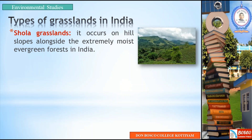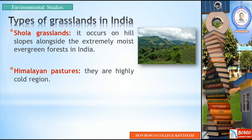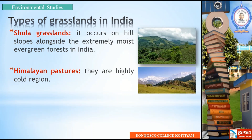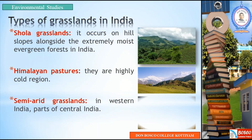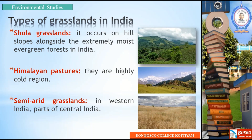Another type is Himalayan Pastures, found in highly cold regions of the Himalayas. Semi-arid grasslands are found in Western India and parts of Central India. These are dry grasslands. The three common grassland ecosystems in India are: Shola Grasslands, Himalayan Pastures, and Semi-arid Grasslands.